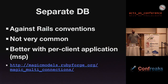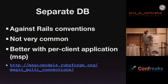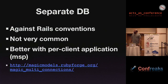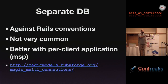I won't go into the details of separate DBs because it's very much against the grain in Rails. One trick is using magic models, but even that isn't built for 1,000 clients with 1,000 databases. It's a better model for per-client MSP — managed service providing — where you actually install an application for the user. Each one gets their own server.